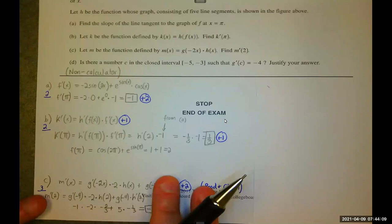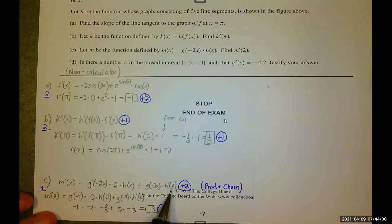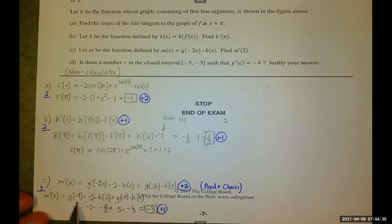Part C, we find M prime of 2, which means we need M prime of X, which means we need the product and chain rules. I took the derivative of G of negative 2X first. That's G prime of negative 2X times the derivative of negative 2X times H of X plus product rule. Derivative of H is H prime. So, negative 2 times 2, that's where the negative 4 comes from. So I need G prime of negative 4, negative 2 times H of 2, G of negative 4, H prime of 2.